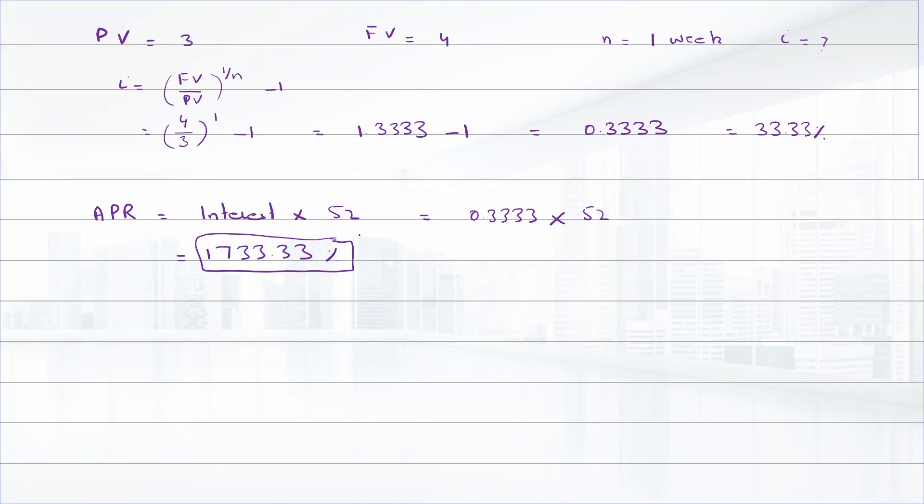It means by giving $3 for one week and getting $4 after one week, you will be earning around 1733.33 interest rate per year. After this we have to find effective annual rate, EAR.